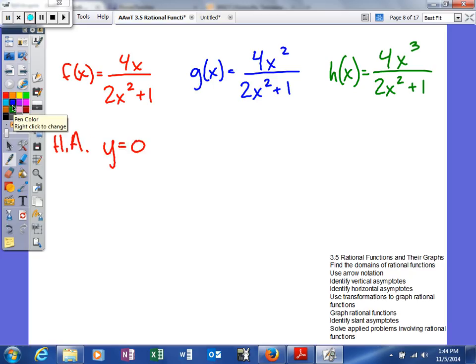In the next one, you can see the degree of the numerator is two, and the degree of the denominator is two. So you're actually going to get the same degree. Anytime you get the same degree on the top and the bottom, your horizontal asymptote is the fraction of the leading coefficients. So we would say our horizontal asymptote y equals four over two. So our horizontal asymptote, we would always simplify that, say y equals two.